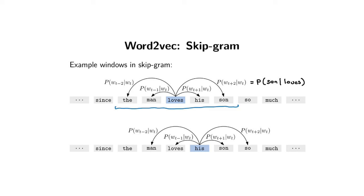The model does this by creating a word embedding for every word type in our vocabulary. We end up having a word embedding for 'loves' and a word embedding for 'son,' written as vectors u and v. At the intuitive level, skipgram pushes the vector for 'loves' so that it's close to the vector for 'son.' If we have a very long sequence, we slide this window over the sentence.